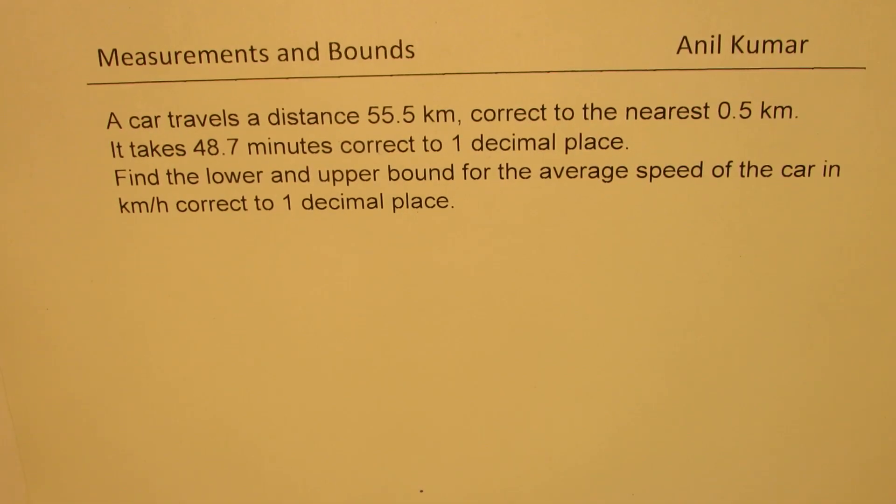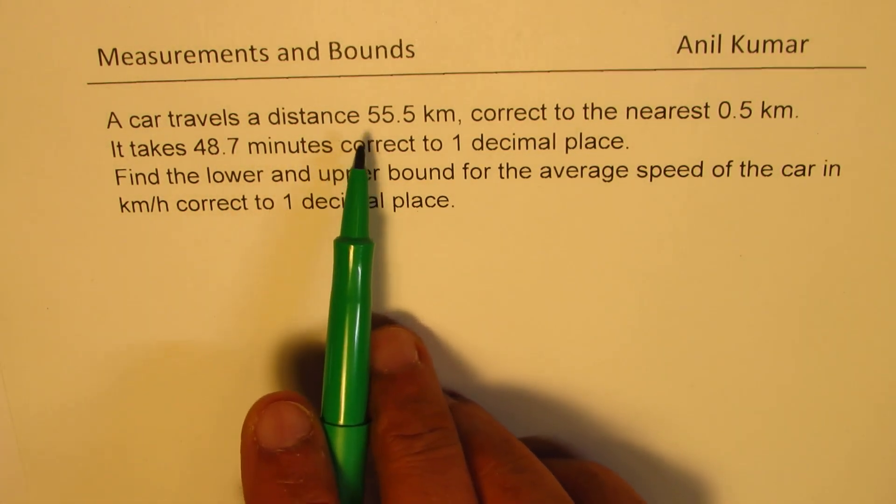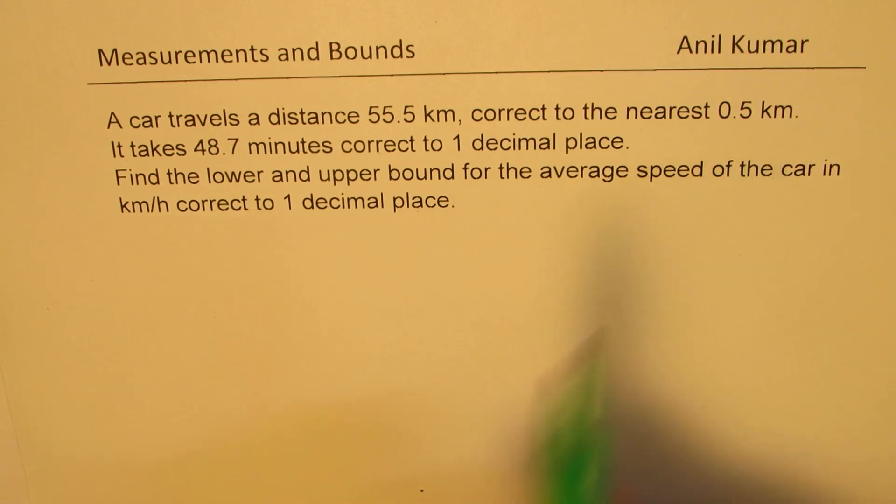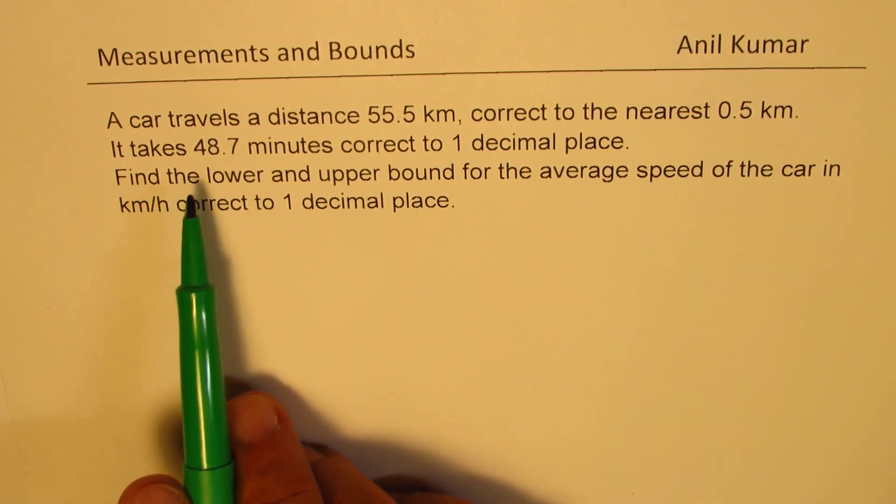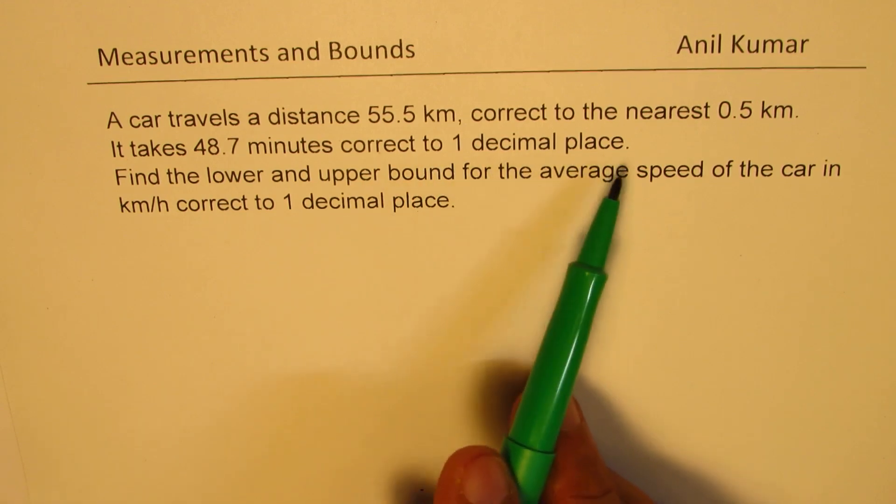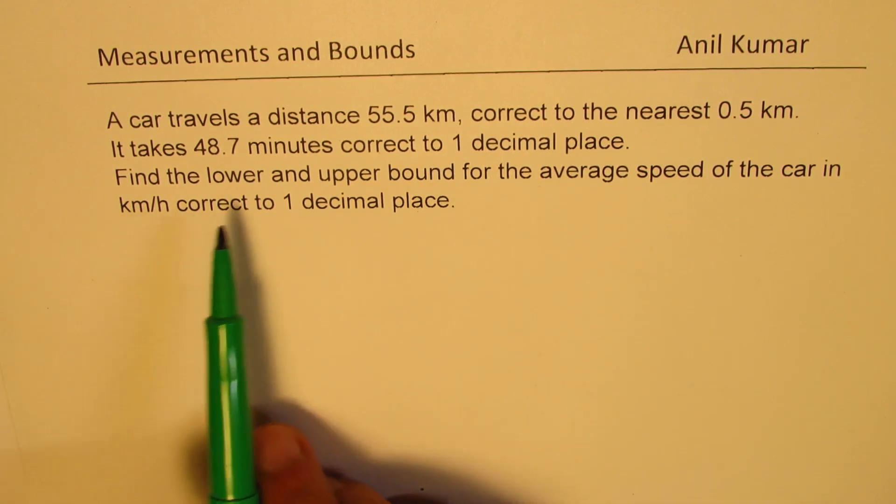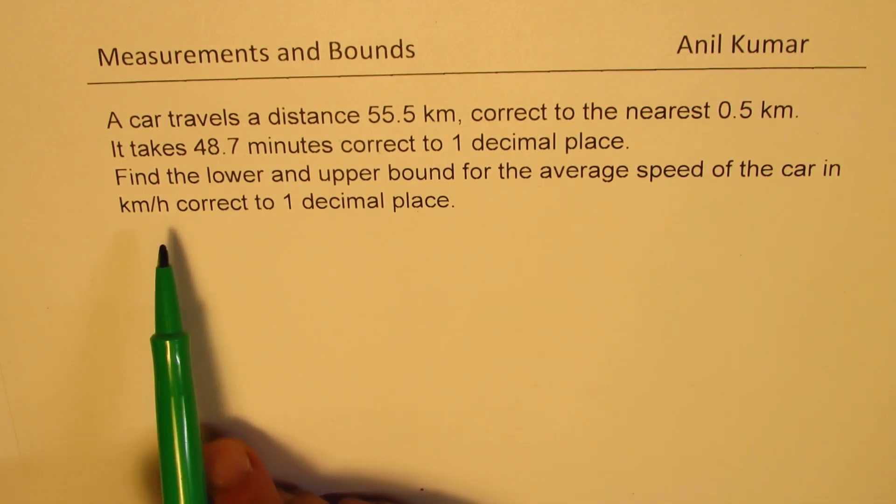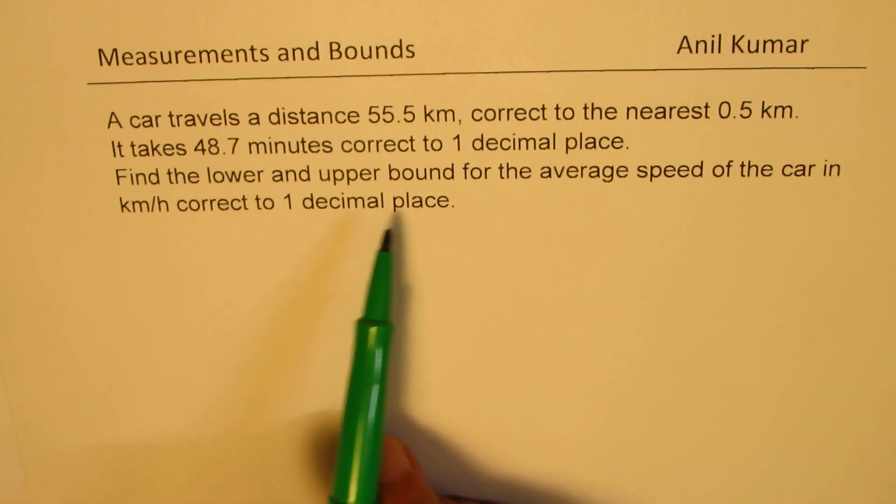I'm Anil Kumar sharing with you an excellent question based on measurements. We need to find the maximum and minimum speed from the given information. The question here is: a car travels a distance of 55.5 km correct to the nearest 0.5 km. It takes 48.7 minutes correct to one decimal place. Find the lower and upper bound for the average speed of the car in km per hour correct to one decimal place.